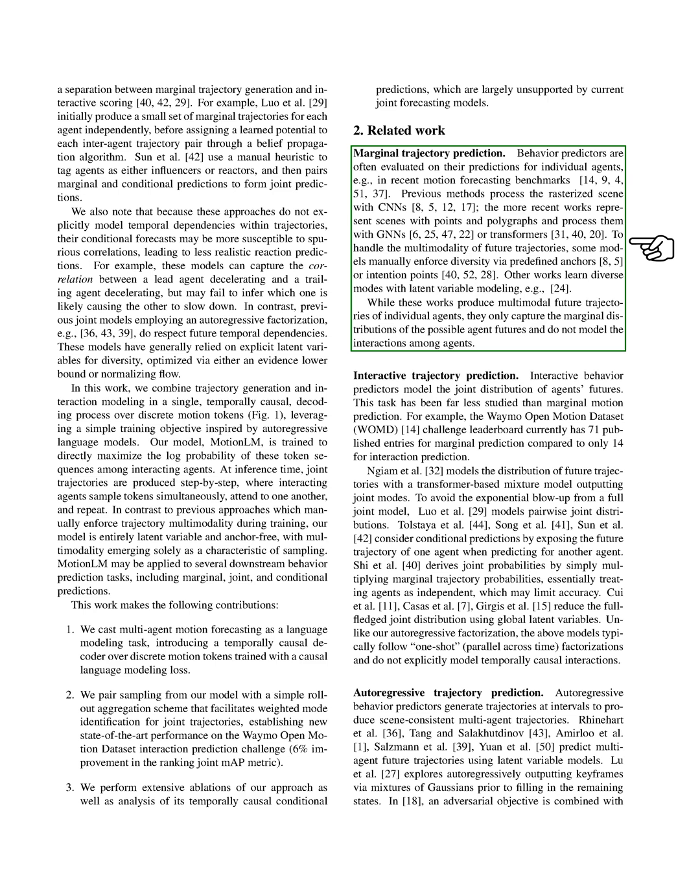In terms of related work, behavior predictors are often evaluated on their predictions for individual agents. Previous methods process the rasterized scene with CNNs, while more recent works represent scenes with points and polygraphs and process them with GNNs. To handle the multi-modality of future trajectories, some models manually enforce diversity via predefined anchors or intention points. Other works learn diverse modes with latent variable modeling.